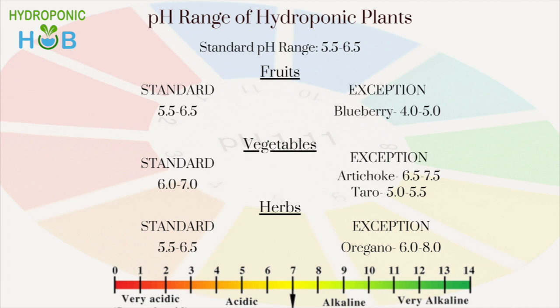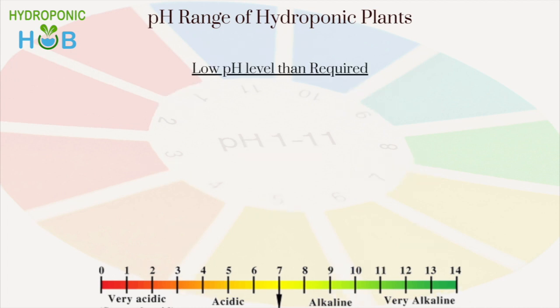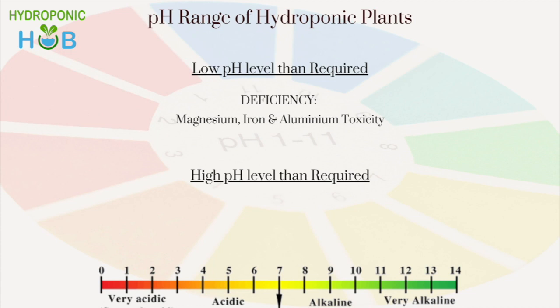If the pH level is lower than required, plants can show symptoms of magnesium deficiency or iron and aluminum toxicity. On the other hand, if the pH level is higher than required, plants cannot absorb calcium and phosphorus properly, resulting in poor growth.